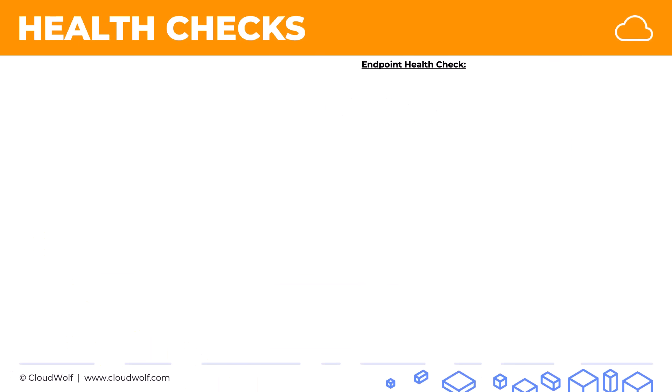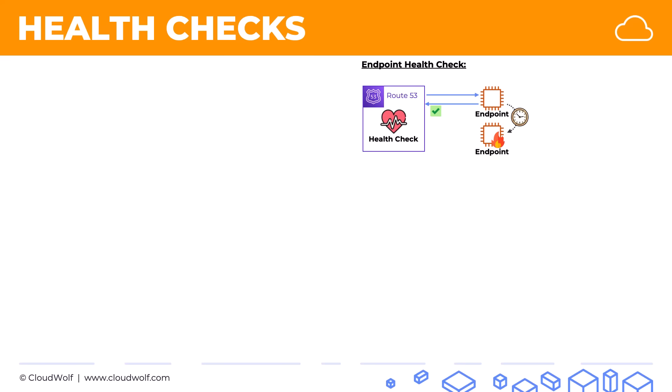There are three types of health checks. The first one is the endpoint health check — I call it the vanilla health check or the very ordinary health check. Here we have a health check whose purpose is to monitor an endpoint, for example an EC2 instance, and check that it is healthy. And if sometime passes and the instance is unhealthy, the health check will be able to spot that and report that it's unhealthy.